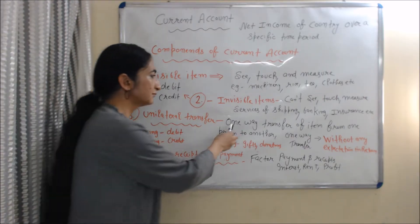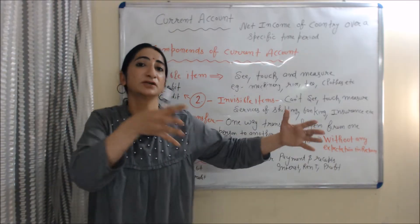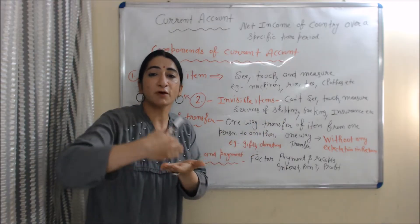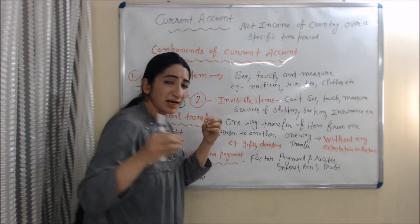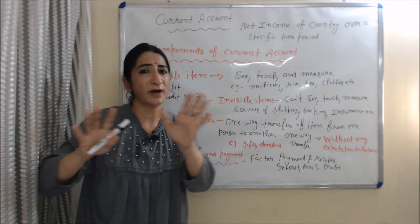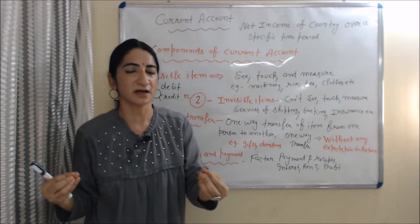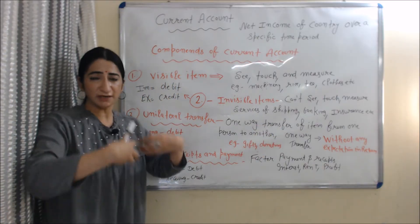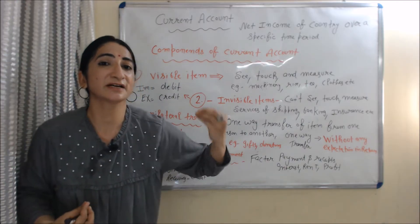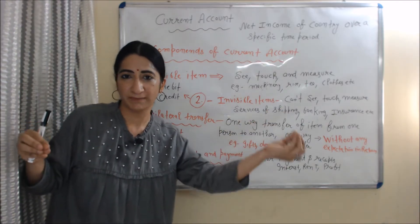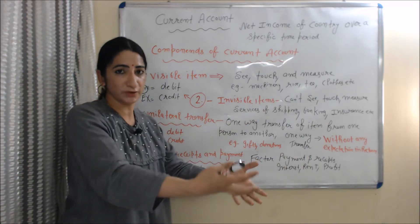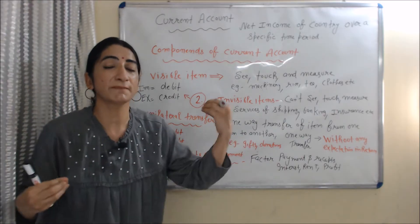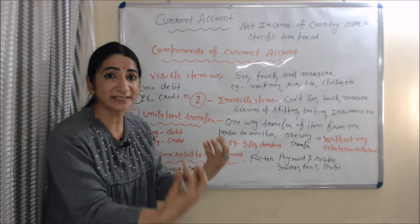The third component of current account is unilateral transfer. Unilateral transfer means a one-way transfer of items from one person to another person without any expectation in return. For example, gift and donation. If you are giving gift and donation to another country, it will be debited in your balance of payment account because money is going from your country. On the other hand, if you are receiving gift and donation from another country, it will be credited in your balance of payment account because money is coming into your country.